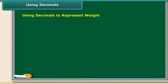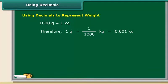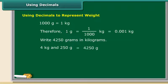Weights can also be represented with the help of decimals. Let us convert 4250 grams into kilograms. There are 4 kilograms and 250 grams in 4250 grams.